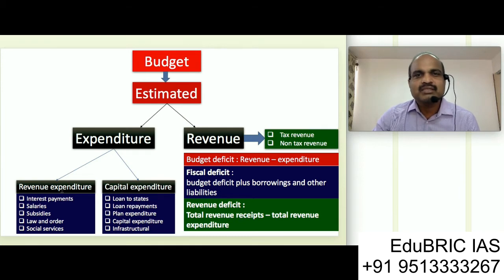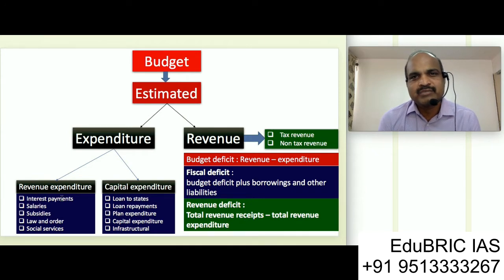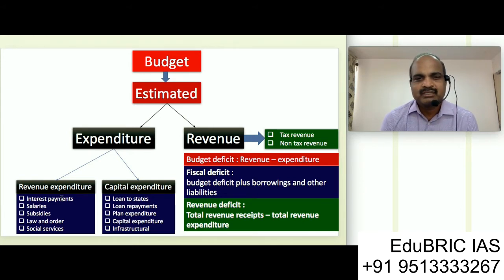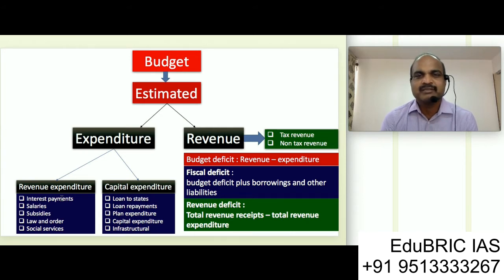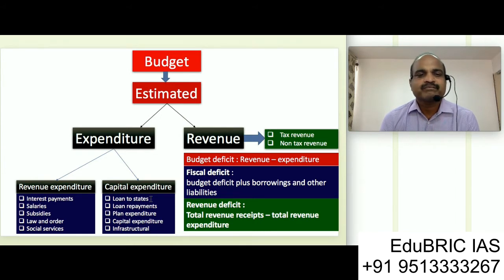In this expenditure we have got two things: one is revenue expenditure and the second thing is capital expenditure. Revenue expenditure includes money incurred by the government on interest payments, subsidies given, and salaries paid. In other words, the running expenditure of the government could be called revenue expenditure. Capital expenditure basically covers whatever loans are given by the government to states, loan repayments, plan expenditure, and expenditure incurred on infrastructure development.